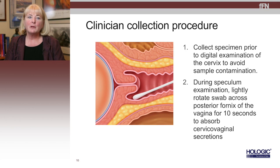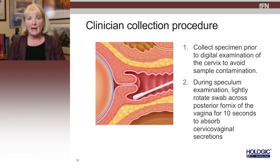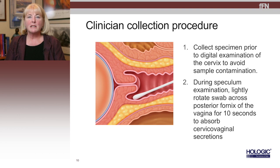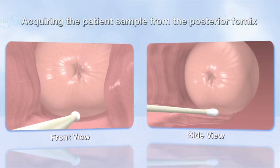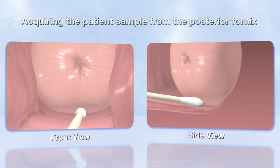Collecting the fetal fibronectin sample has some very important instructions for you to follow. Whether you are in an outpatient setting or an inpatient setting, the collection process is exactly the same. When the patient presents with preterm contractions, the first thing you're going to do is a sterile speculum exam to obtain the sample. You don't want to do a digital exam first because that's going to make your sample ineligible. During the speculum exam, you're going to rotate the swab across the posterior fornix for 10 seconds so that you can collect those cervical vaginal secretions. During speculum examination, lightly rotate the polyester-tipped swab across the posterior fornix of the vagina for 10 seconds to absorb cervical vaginal secretions.